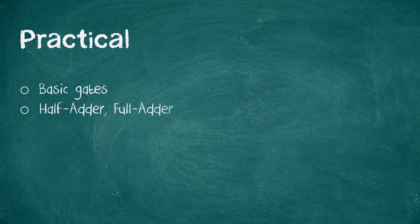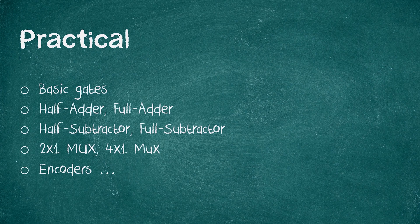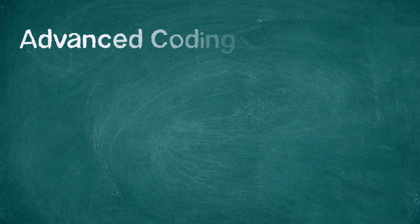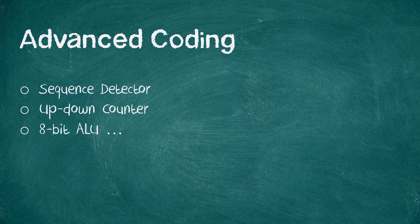With this, the theoretical part is over and we will move to the practicals. In this module, we will practice many different codes, some of which are visible on the screen. Once basic level codes are completed, we will start practicing some advanced code like the code for sequence detector, up-down counter, 8-bit ALU, and many more.